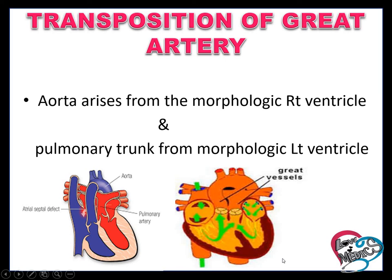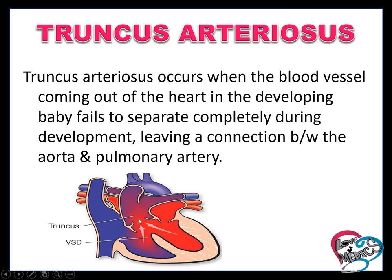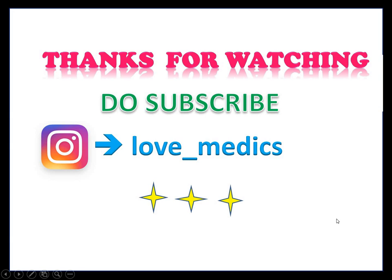Transposition of the great arteries involves the aorta and pulmonary trunk. Normally the aorta arises from the left ventricle, but in this condition the aorta arises from the right side and the pulmonary trunk arises from the left side. Truncus arteriosus is the connection between the aorta and pulmonary artery, caused by a defect in the development of the fetal heart. Thanks for watching.